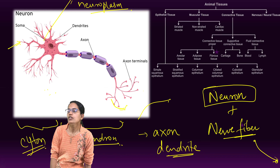To wind up, under animal tissues we have four basic classifications: epithelial, muscular, connective, and nervous tissues. Under muscular: skeletal, smooth, or cardiac. Under epithelial: simple and stratified, each with squamous, cuboidal, or columnar subtypes. Under connective: proper connective tissue (adipose, areolar, or fibrous — tendon or ligament), supportive tissue (bone or cartilage), and fluid tissue (blood or lymph). This was a brief introduction — feel free to post any questions in the comment section.